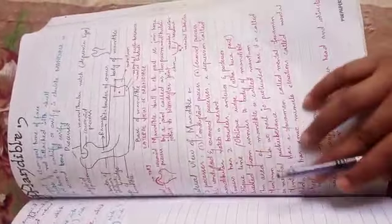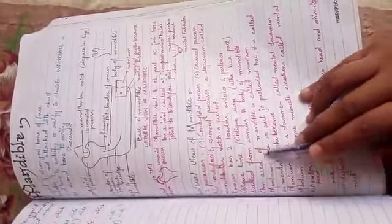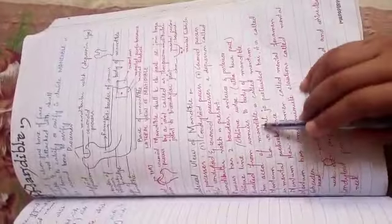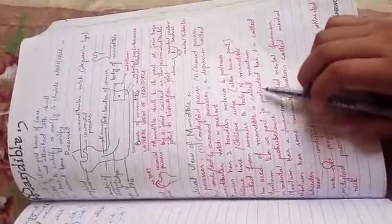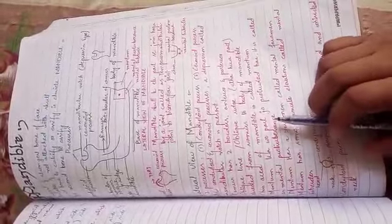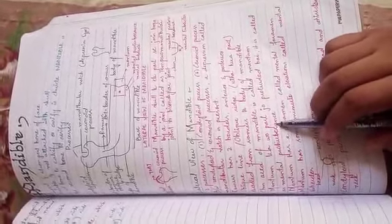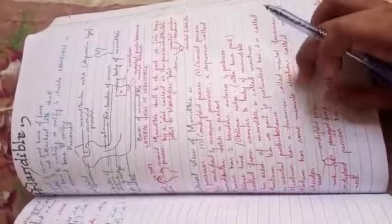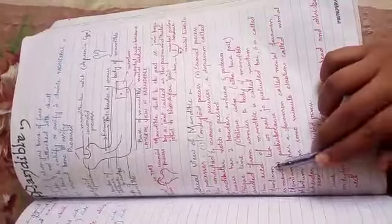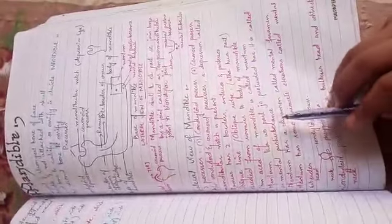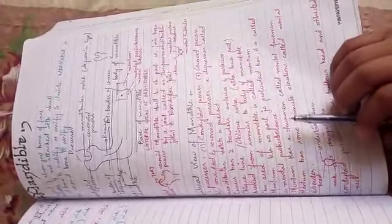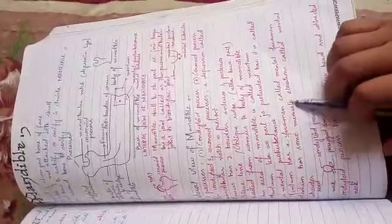Then there is the chin area of mandible which is protruded. We call it mental protuberance. Protuberance means it is a little bit elevated. Mandible means chin, and the chin is a protruded part that we call mental protuberance. There is a foramen in the mandible which we call mental foramen.